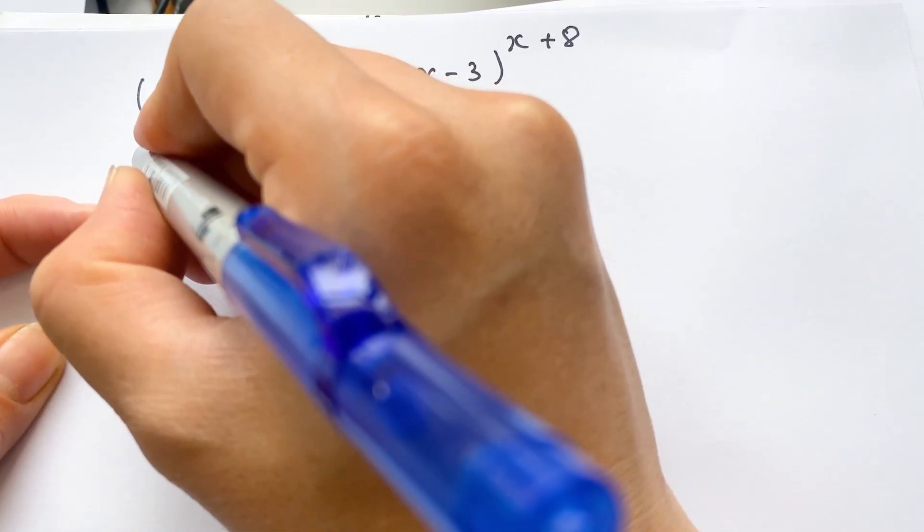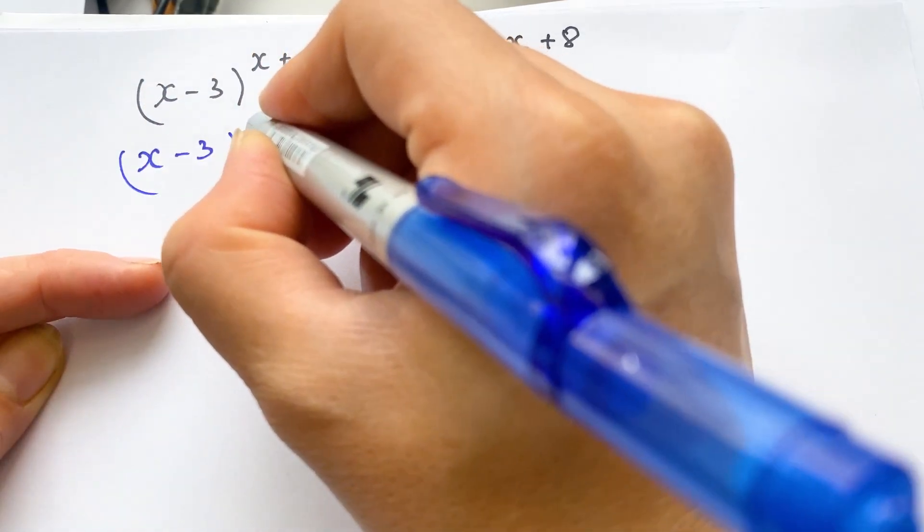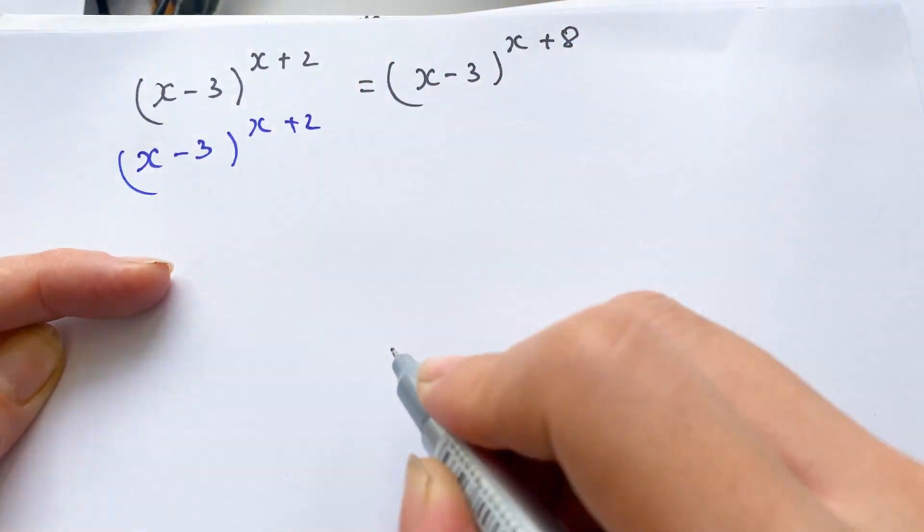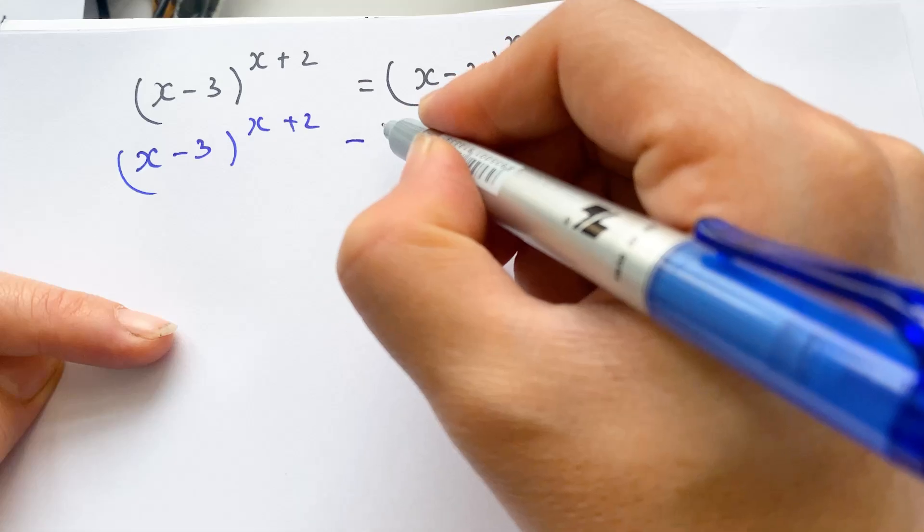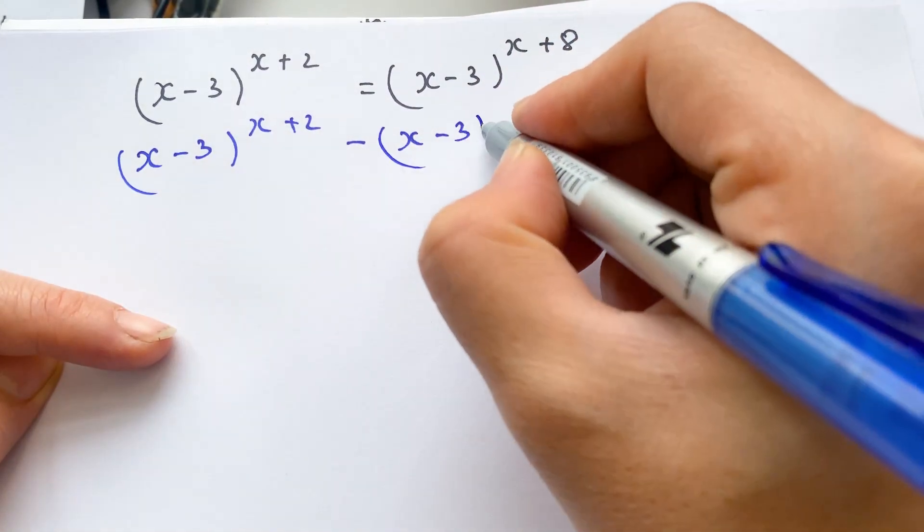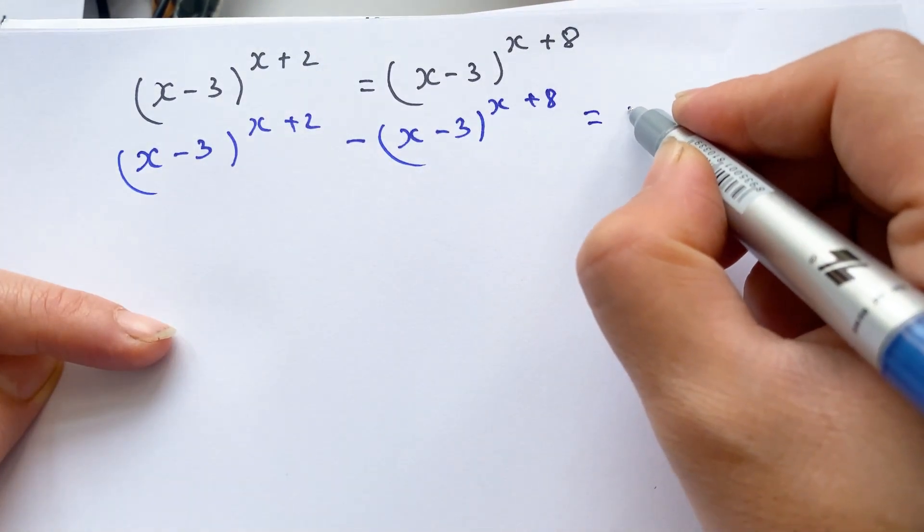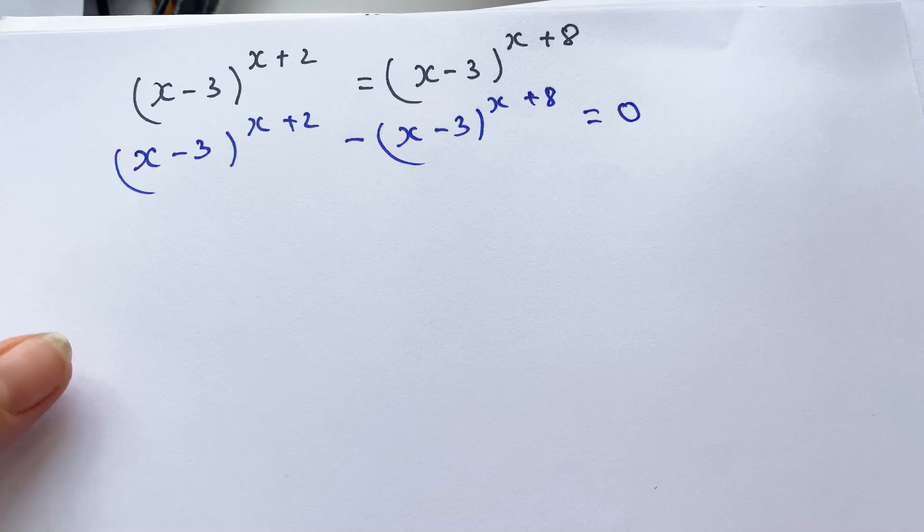Therefore, we can have (x-3)^(x+2) minus (x-3)^(x+8) equals 0, right?